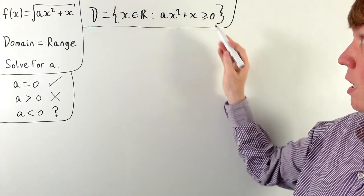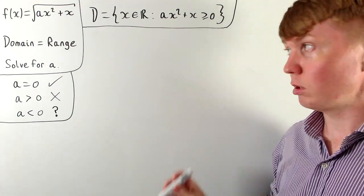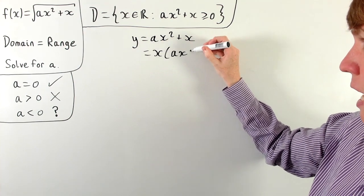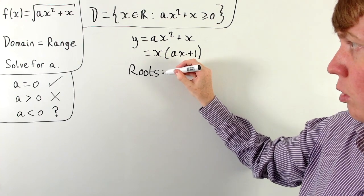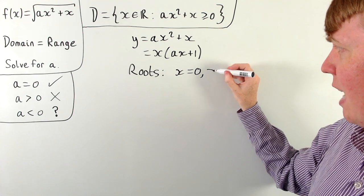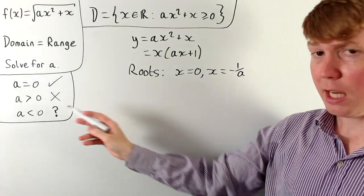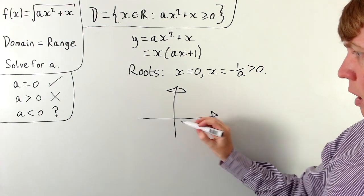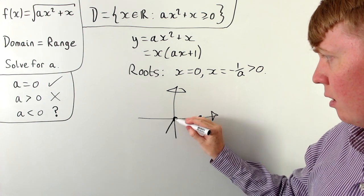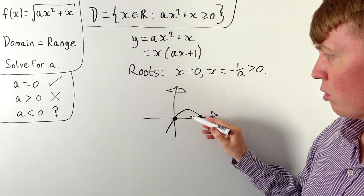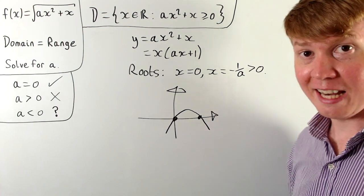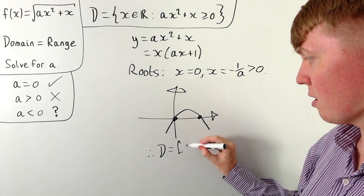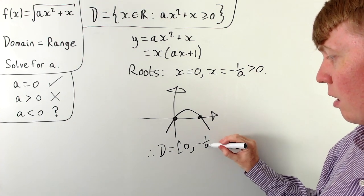Now that a is negative, we can find the domain exactly. We want ax² + x ≥ 0, and it helps to consider the graph of y = ax² + x, which factorizes to x(ax + 1). The roots are at x = 0 and x = −1/a. Because a is negative, −1/a is positive. The quadratic is positive between zero and −1/a, so the domain is the interval [0, −1/a].